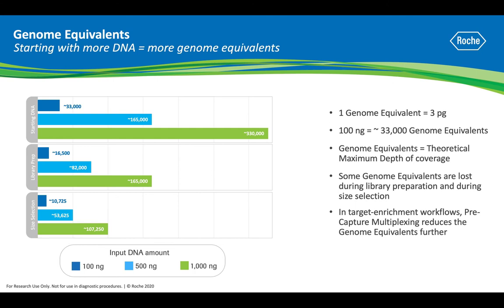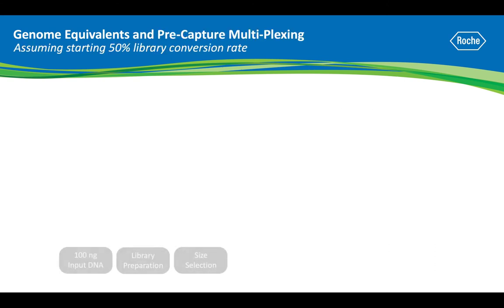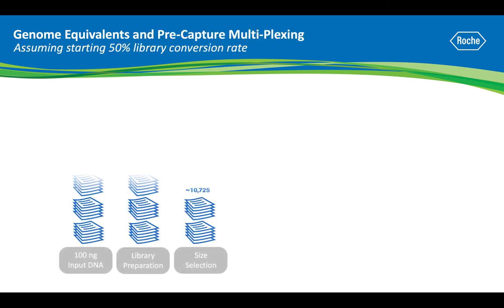In target enrichment workflows, pre-capture multiplexing reduces the amount of genome equivalents further. As we just demonstrated, when you go into library prep with 100 nanograms — or 33,000 genome equivalents — your final library after size selection results in 10,700 genome equivalents.